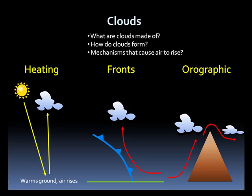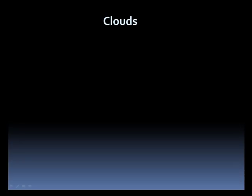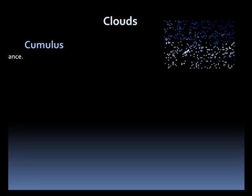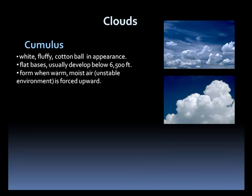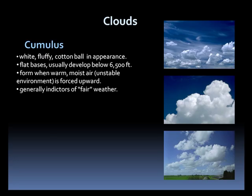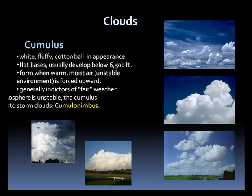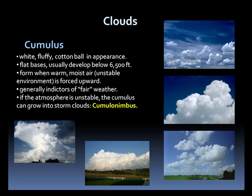Now let's turn our attention to the different types of clouds. Cumulus clouds are fluffy, cotton ball in appearance, with flat bases usually developing below 6,500 feet. They form in unstable environments where warm and moist air is rising. Generally, a few cumulus clouds indicate fair weather. However, if the atmosphere is suitably unstable, these cumulus will continue to grow and could become thunderstorm clouds called cumulonimbus.